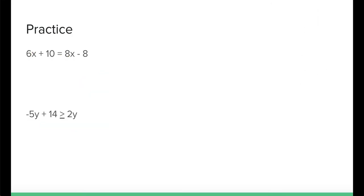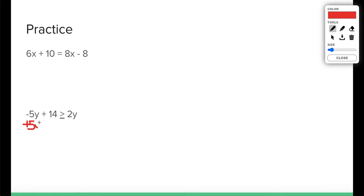One more. Maybe you want to try this one on your own and press play when you're ready to hear. This one's kind of interesting because my smallest variable is actually a negative. Negative 5y is smaller than a positive 2y. To move a negative 5y, I'm going to add 5y to both sides. That's the inverse of that negative. That cancels out my 5y's on the left. I have 14y is greater than or equal to 7y.